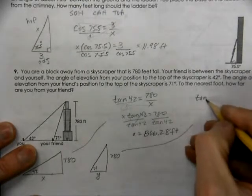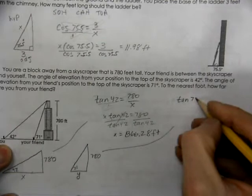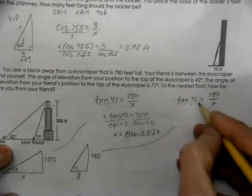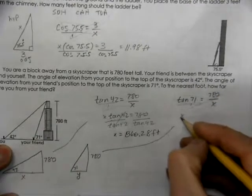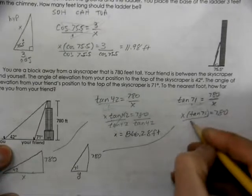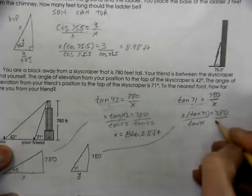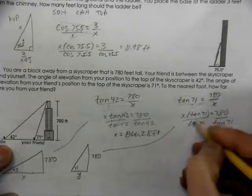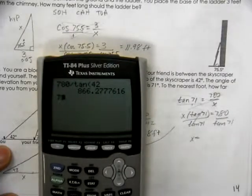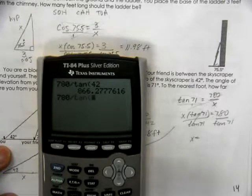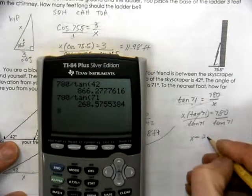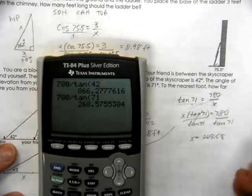Then, we're going to do tangent again, but this time we're going to have the angle of 71. So, we're going to divide by the tangent of 71. So, we have 780 divided by the tangent of 71. Now, you're 268.58 feet.